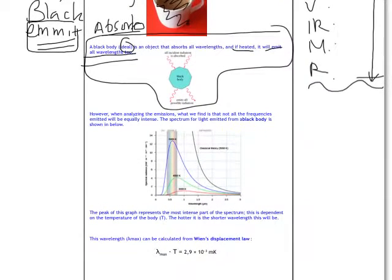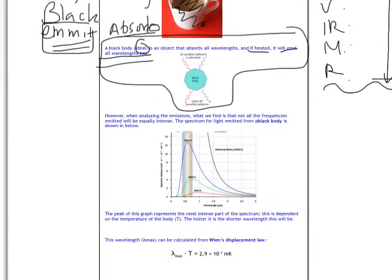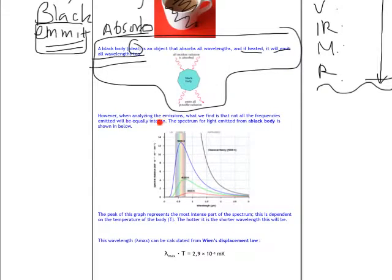In fact, what actually happens in this ideal black body, when you analyze the emissions, that means we get sensors to look at each of those traces. When analyzing emissions, what we find is not all the frequencies are emitted with the same intensity. But surely they should be giving off everything. They don't. And this is a pattern that we see for all black bodies. In fact, for all hot objects. What we find is that not all the frequencies emitted will be equally intense. The spectrum of light emitted from a black body is shown below.